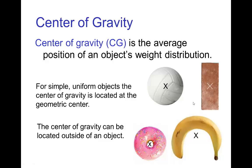For more complicated objects, it would be some average position. In fact, the center of gravity can even be outside of the object. Like with a donut, it would be in the center of the hole. This curved banana, it's somewhere inside the curve.